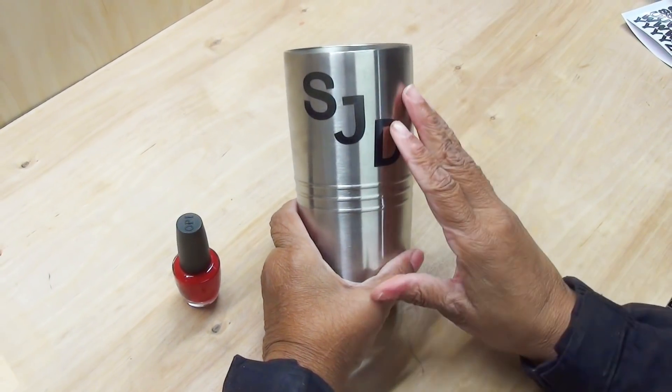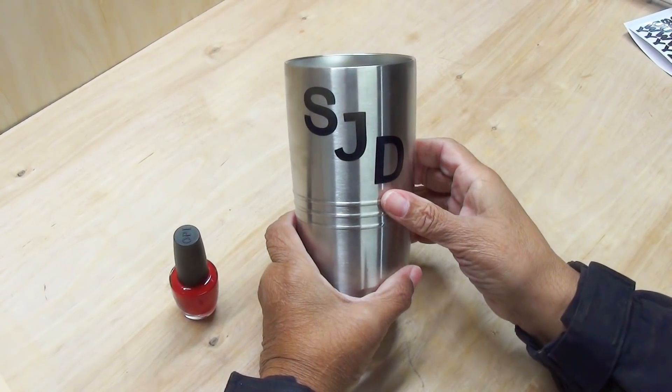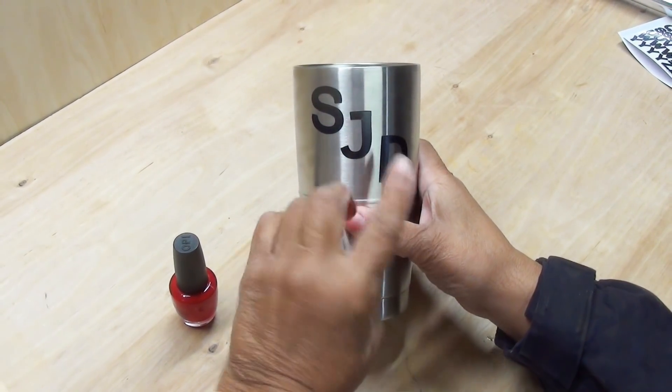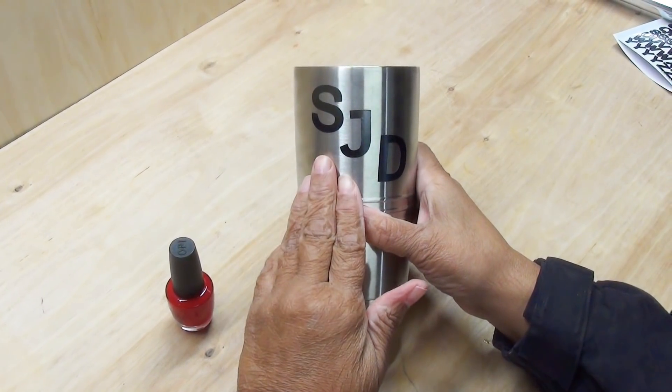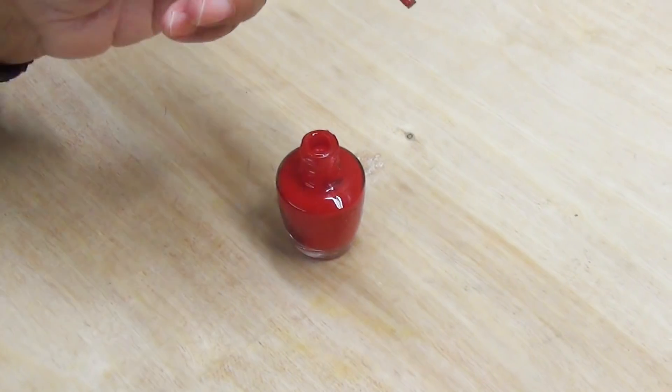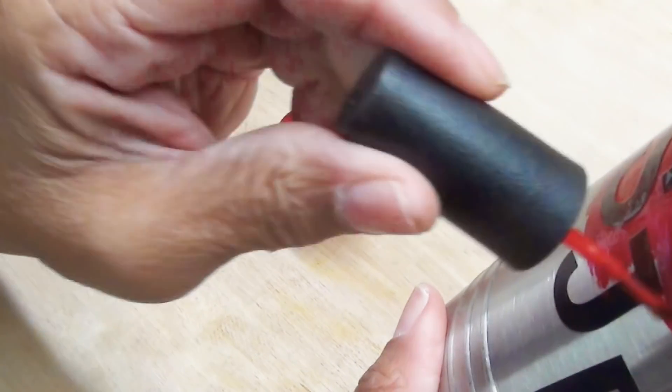Now there's another kind of resist that I want to show you. And it's as simple as taking the vinyl letters and attaching them to the item that you want to personalize, like I have here. And then taking fingernail polish. And you're going to completely paint over vinyl letters.